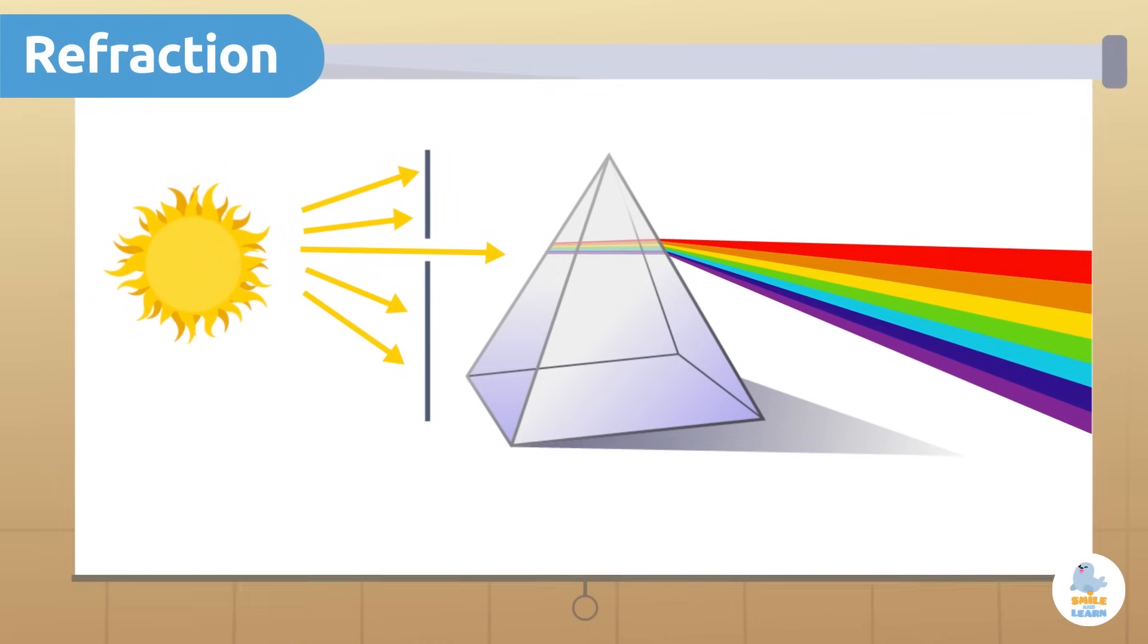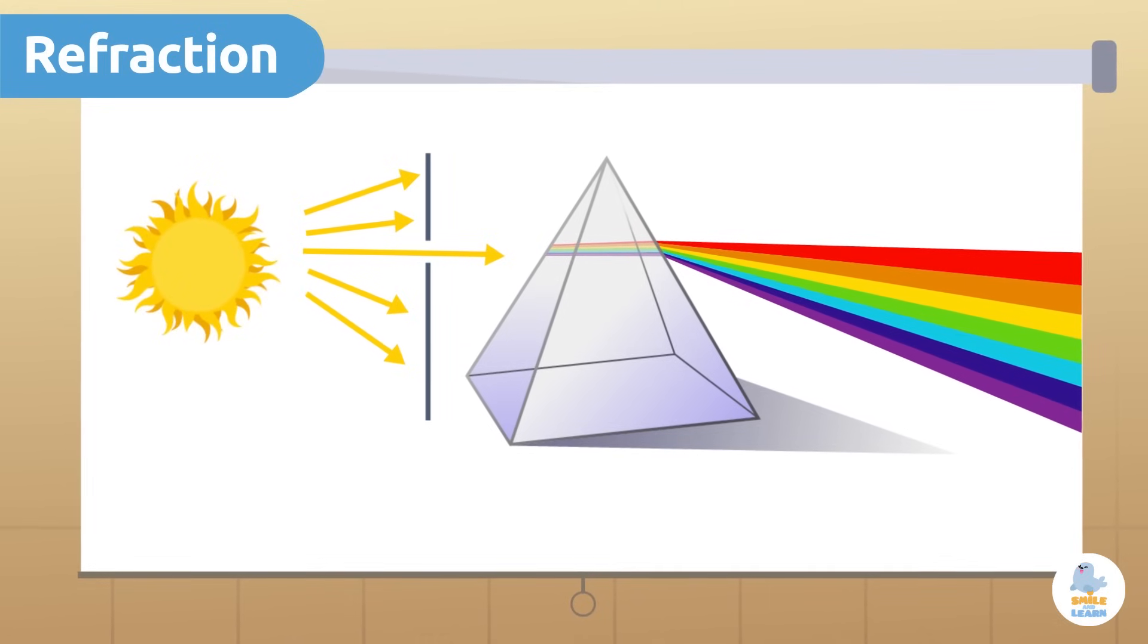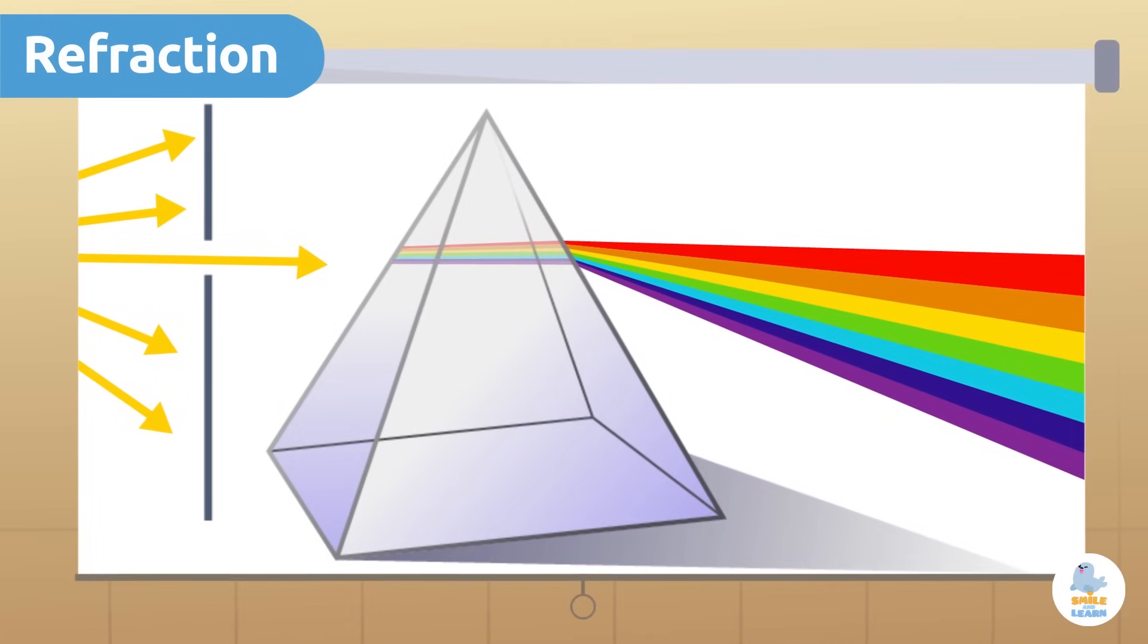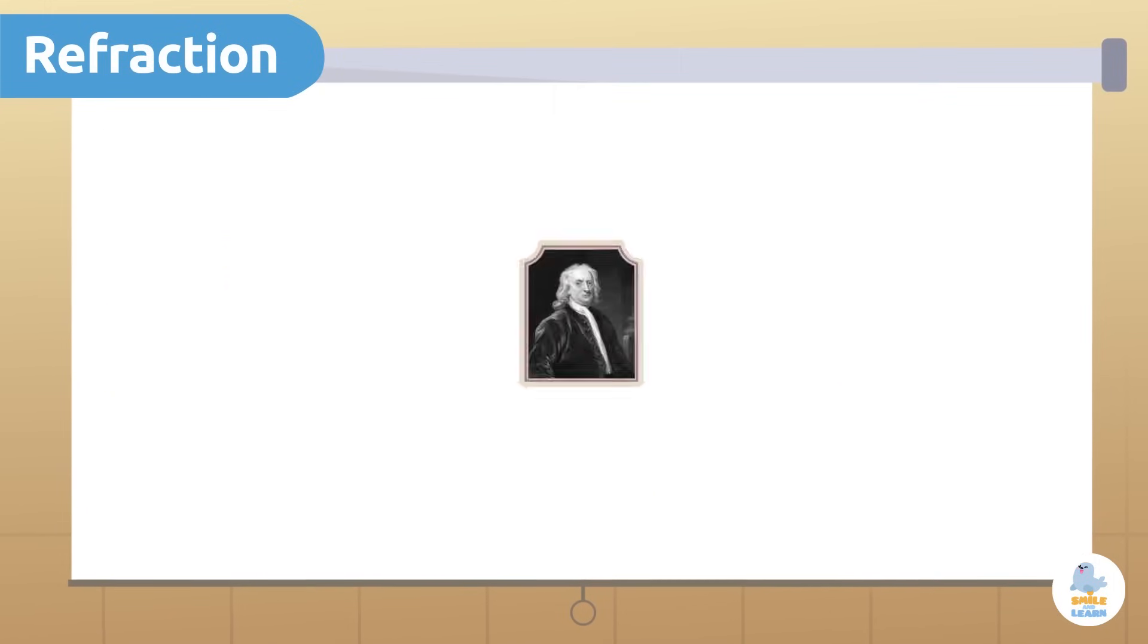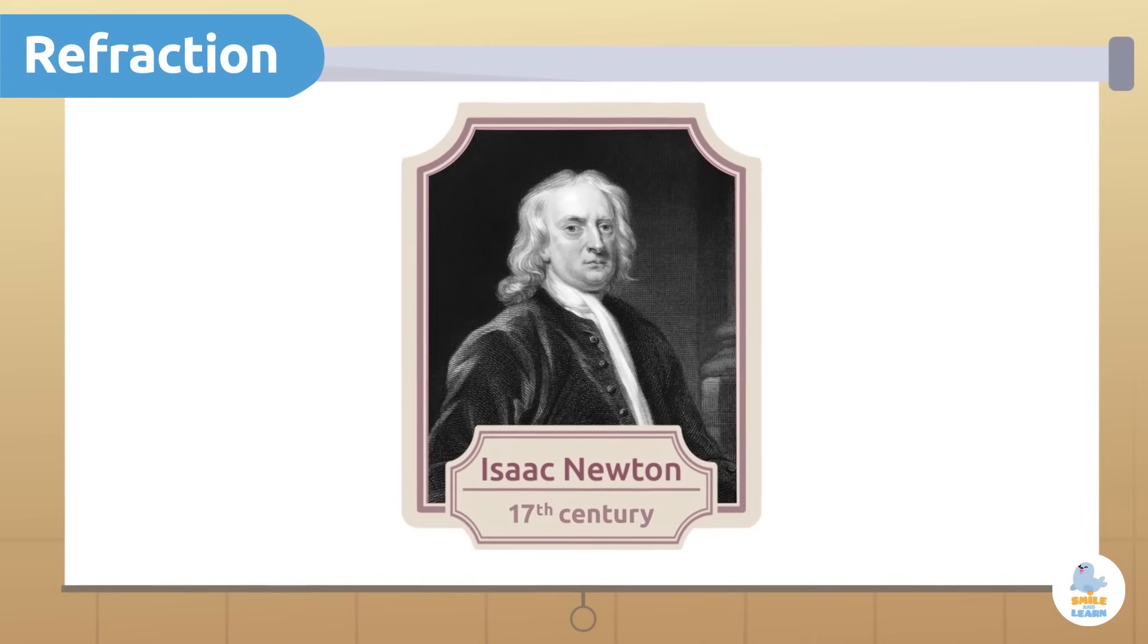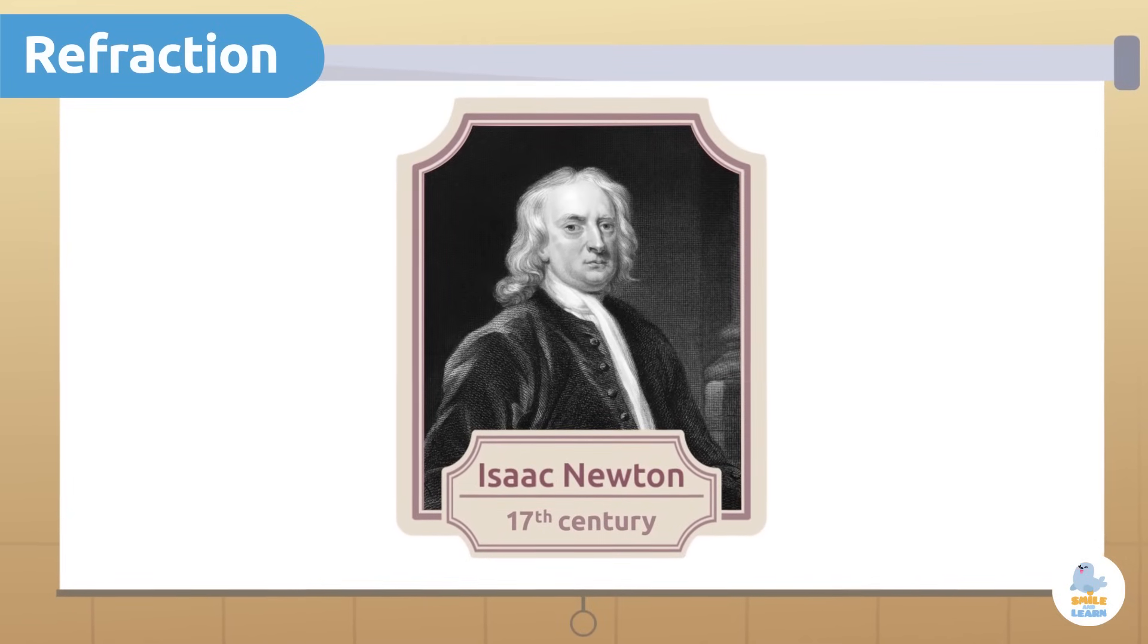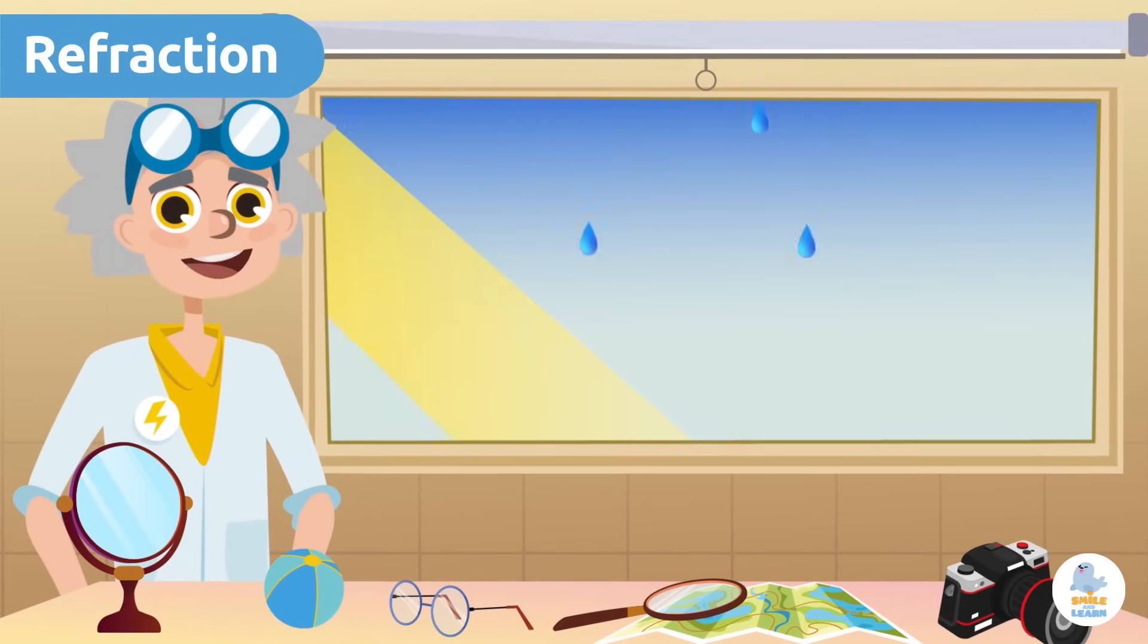This phenomenon can be seen using a prism. When light rays reach the prism they are broken down into different colors that make them up. Isaac Newton was the first to achieve this with an experiment done in the 17th century. Guess it was that long ago! Can you think of any natural event where this phenomenon occurs?